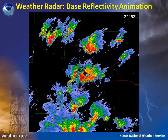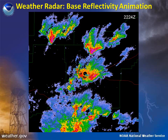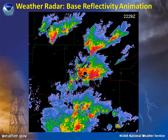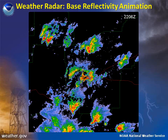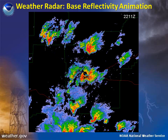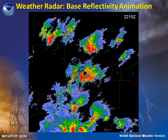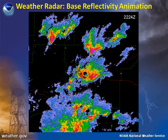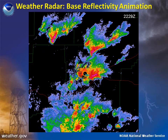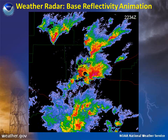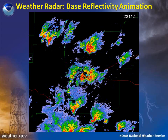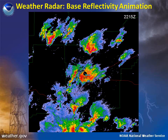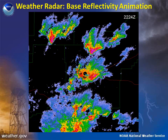If the colors on reflectivity images are getting brighter with time, we know that a thunderstorm is growing stronger. This indicates that more power is being returned to the radar as the raindrops and hailstones grow larger and precipitation becomes heavier.